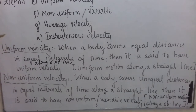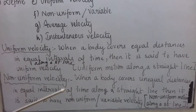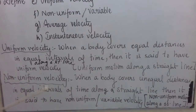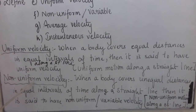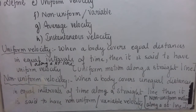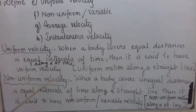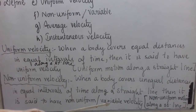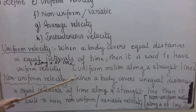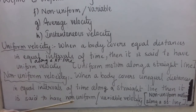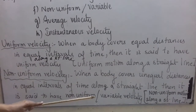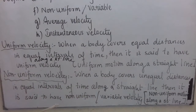For example, when a car is moving straight with a speed of 80 km/h and then takes a turn, its velocity is non-uniform because the direction changed. Or if a car is changing its speed but keeping the direction the same, then also it is said to have non-uniform velocity. So when a body covers unequal distances in equal intervals of time along a straight line, it is said to have non-uniform or variable velocity, or non-uniform motion along a straight line.